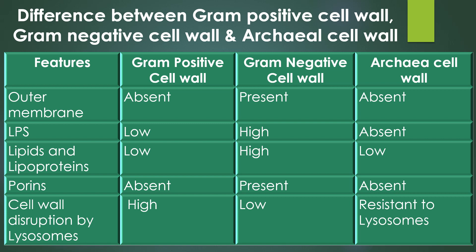The content of lipopolysaccharide (LPS) is very high in gram-negative cell wall, low in gram-positive cell wall, and completely absent in the archaea cell wall. The concentration of lipids and lipoproteins is very low in gram-positive cell wall and high in gram-negative cell wall. The lipid and lipoprotein content is also very low in the archaea cell wall.